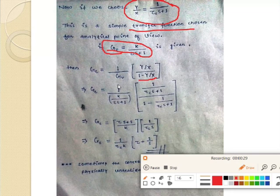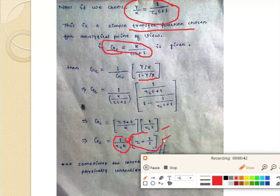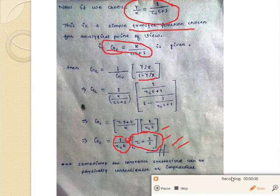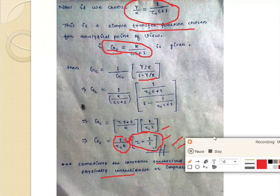After equating Gv and Gc, we get the value of Gc which is equal to the finalized value. The Gc is equal to 1/(τs+1) into τs, 1 τ into τ plus 1 by s. After equating Gv, it is a theoretical result, so that we can conclude that sometimes our controller synthesized can be physically unrealizable or impractical.